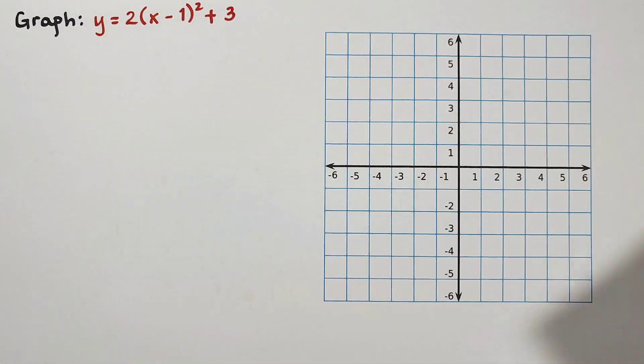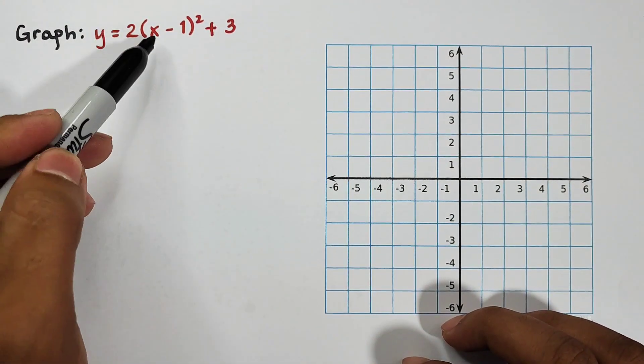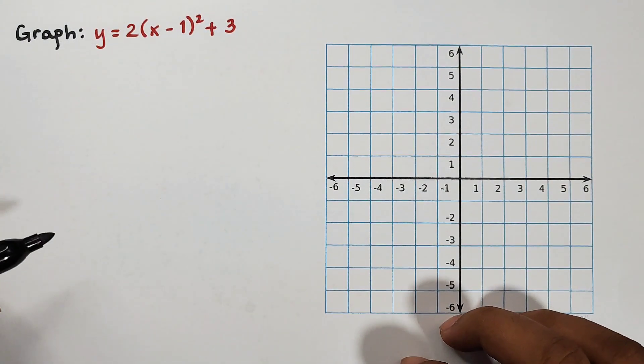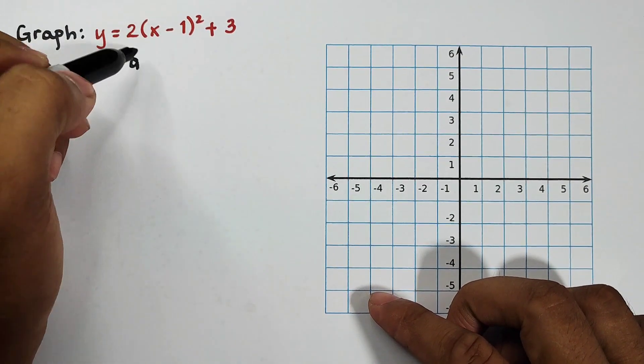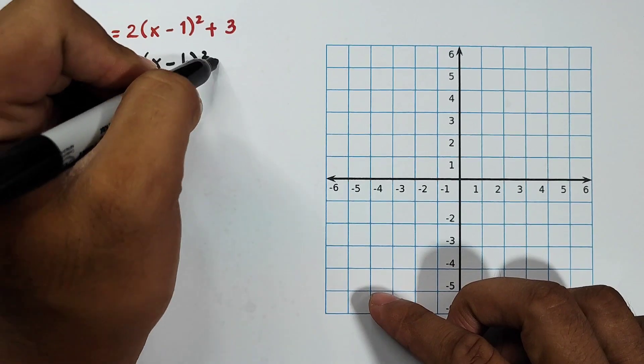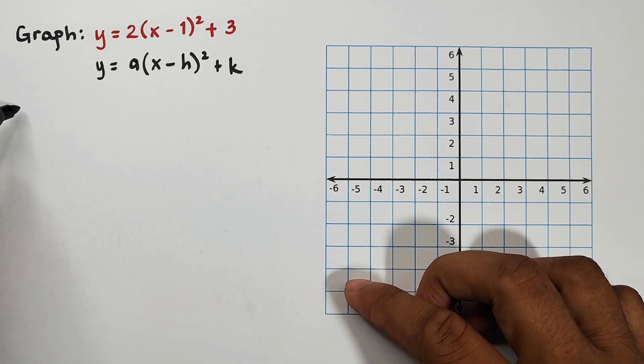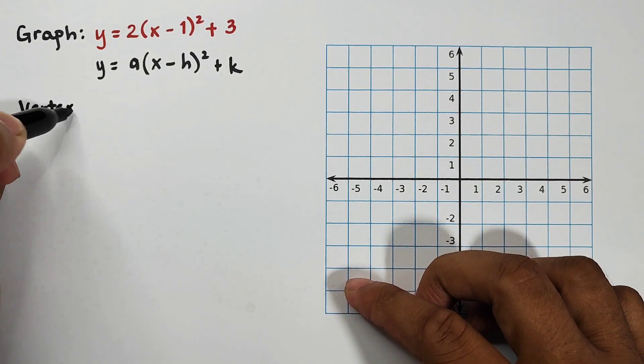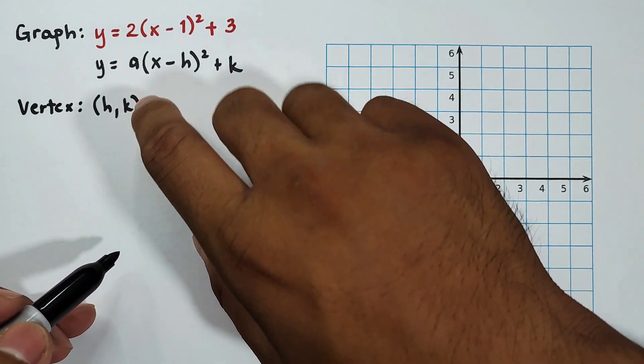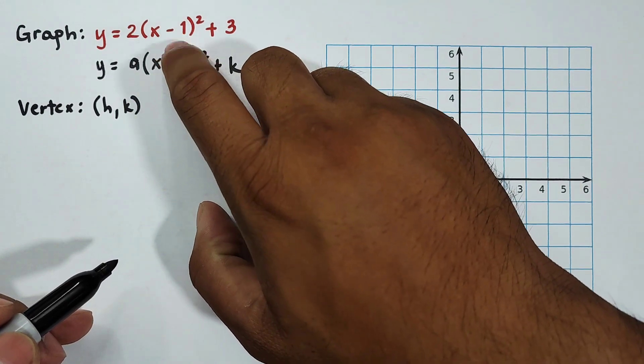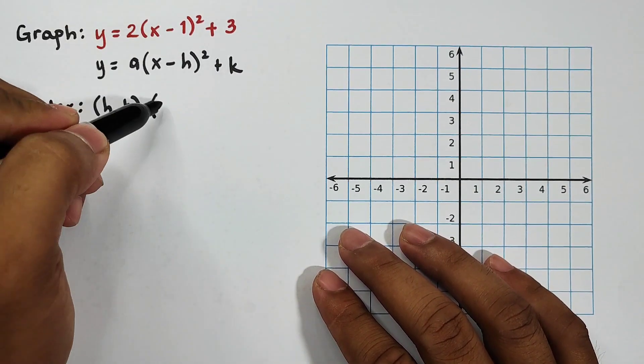This one is the first example that we have here, and we're going to graph this quadratic function. As you can see, we are given the quadratic function y = 2(x - 1)² + 3. So first thing you need to do is identify the form of this graph, and this form is already in the form y = a(x - h)² + k, wherein this one is the vertex form.